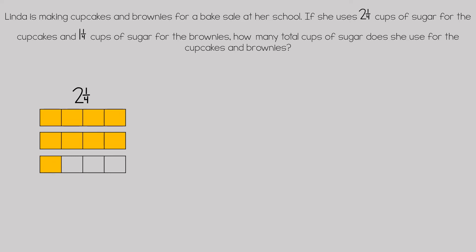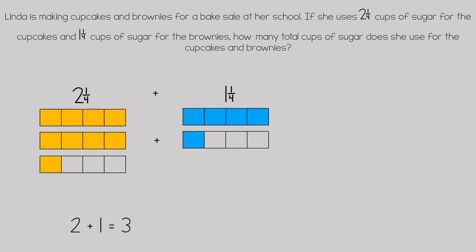We can represent two and one-fourth using a bar model. We can see that four-fourths and four-fourths is shaded, which represents two wholes and then one-fourth, plus one and one-fourth, where four-fourths is shaded in blue plus one-fourth. So two and one-fourth plus one and one-fourth.